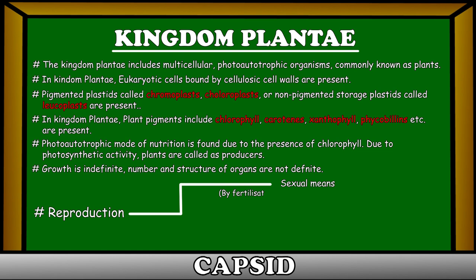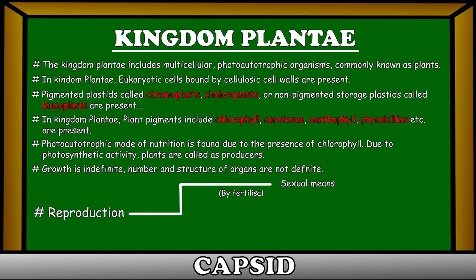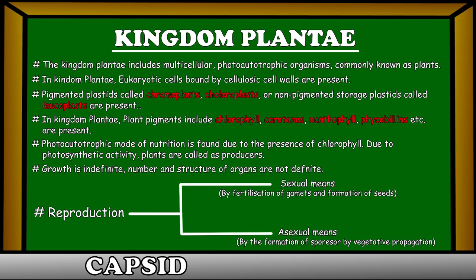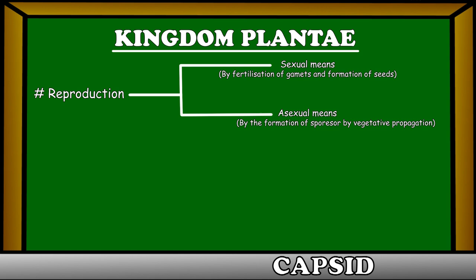In Plantae, reproduction takes place by sexual means — that is, by fertilization of gametes and formation of seeds — as well as by asexual means, that is, by the formation of spores or by vegetative propagation.